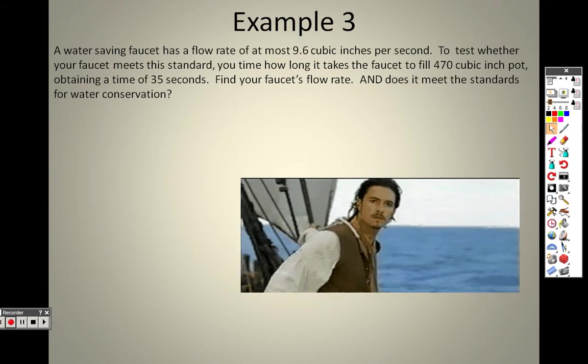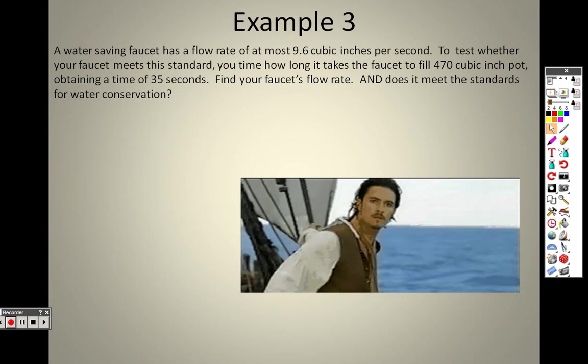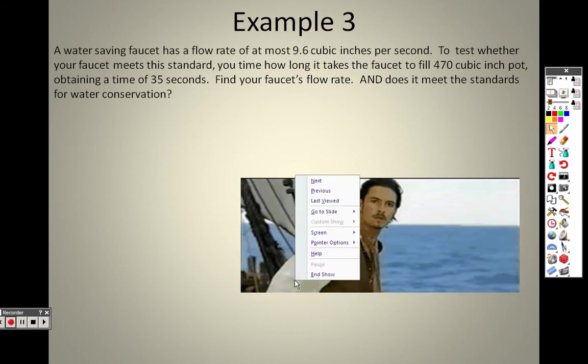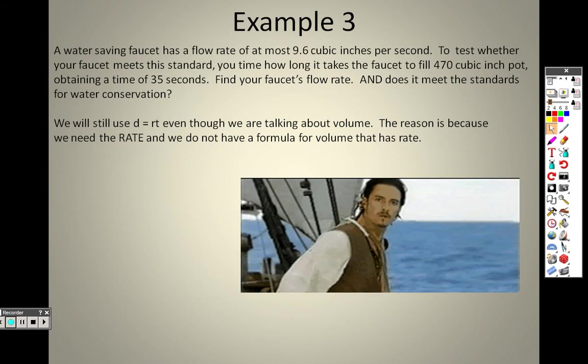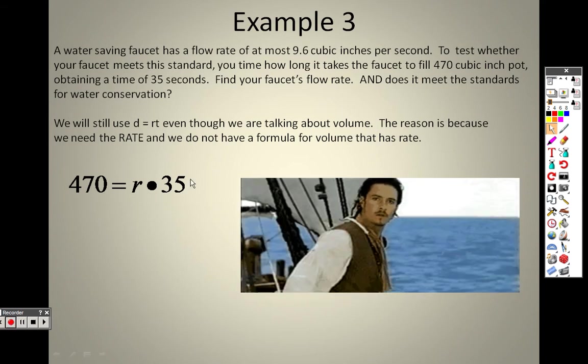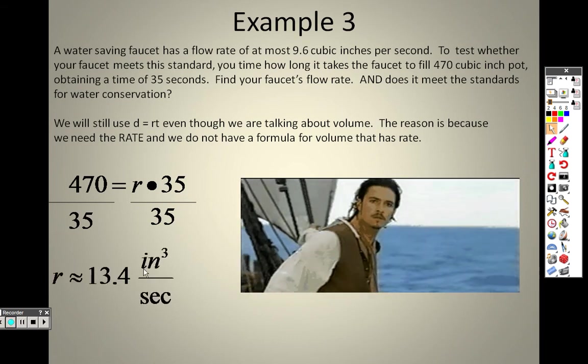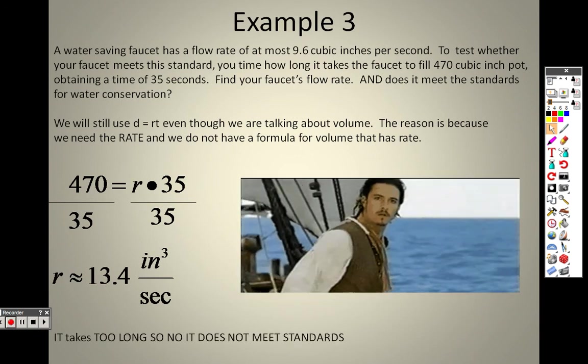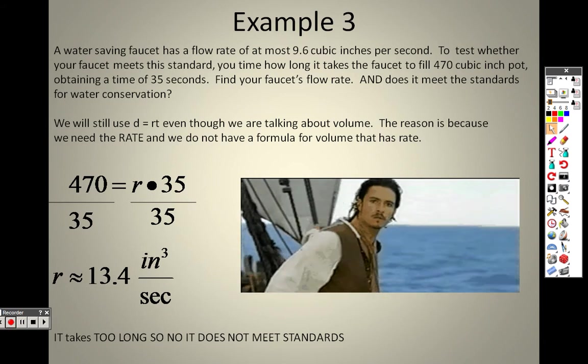Example 3. A water-saving faucet has a flow rate of, at most, 9.6 cubic inches per second. To test whether your faucet meets the standard, you time how long it takes the faucet to fill 470 cubic inch pot, obtaining a time of 35 seconds. Find your faucet's flow rate. So to find your faucet's flow rate, we will use D equals RT because we're talking about rate again, right? And instead of the D, we're going to talk about it in terms of volume. So the volume is 470, and we know that the time is 35 seconds. So I put it in D equals RT, and since multiplication, we divide both sides by 35, and I figure out that the rate is approximately 13.4 inches cubed per second that gets filled. So it takes too long, so no, it does not meet the standards because it says that it needs to flow at 9.6, and it's not. It's flowing more than that. It's too long. It takes too long to fill.